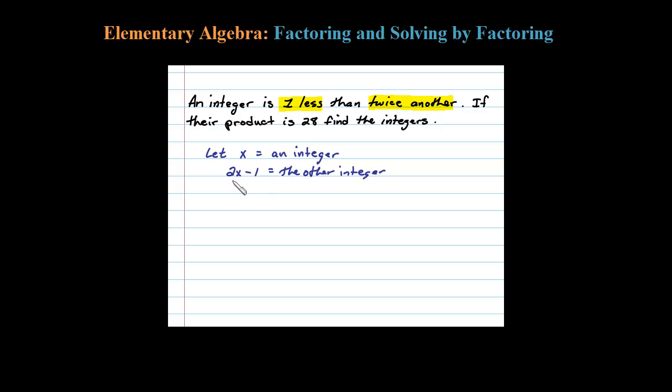All right, so one less than twice another, there it is, one less than twice the other integer. Once we've identified the variables, we try to set some sort of algebraic equation up so we can solve it. Looking at the second sentence, let's identify the keywords there and I see product is 28. Now the product means to multiply, so if I multiply these two numbers together, x times 2x minus 1, that product is supposed to be 28. All right, so this is our setup.